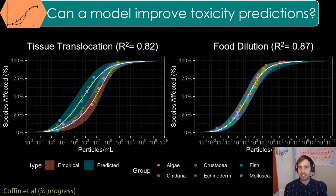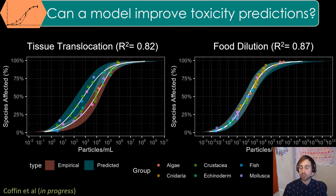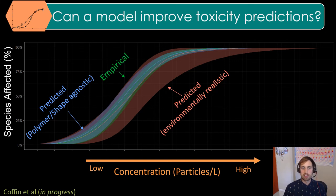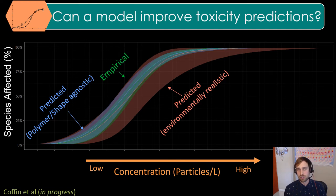The reason for this is that the tissue translocation model was built using translocatable size effect studies, or smaller than 83 microns in diameter, which largely restricted the training database. As you have more data in your training database, you have more accurate predictions. We used the random forest model to predict food dilution effect concentrations for a realistic distribution of microplastics, based on the relative proportions of polymers and shapes actually found in the environment. By comparing these species sensitivity distributions, we can see that they're not significantly different than the empirical distribution, as demonstrated by the significant overlap of these 95% confidence intervals, shown as colored ribbons.